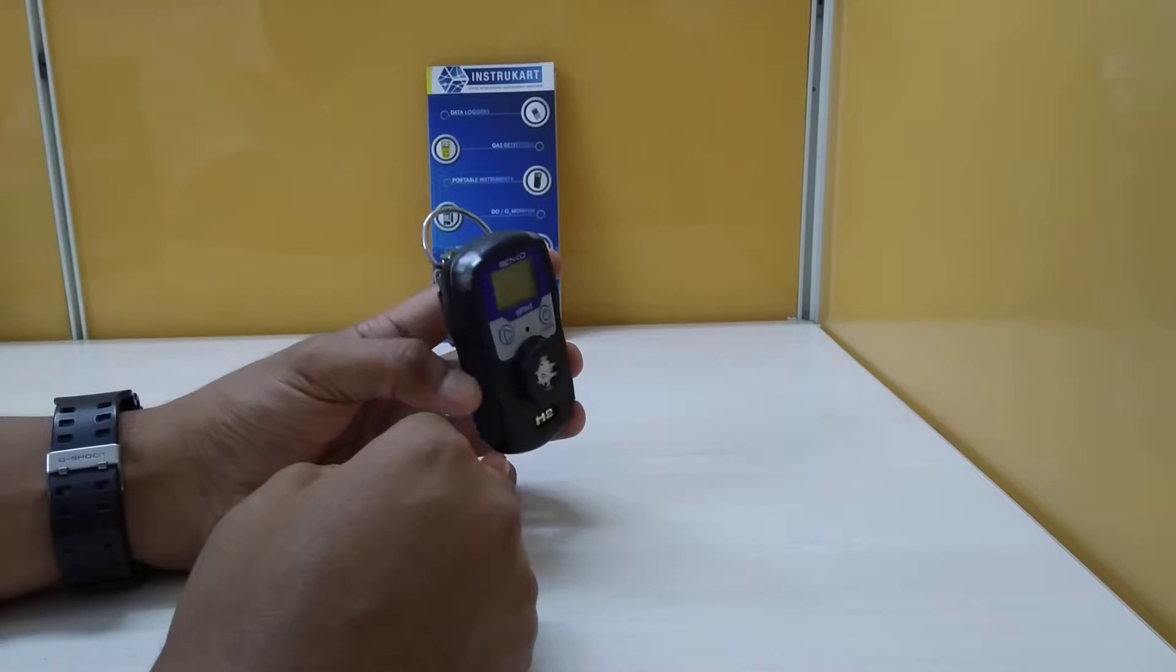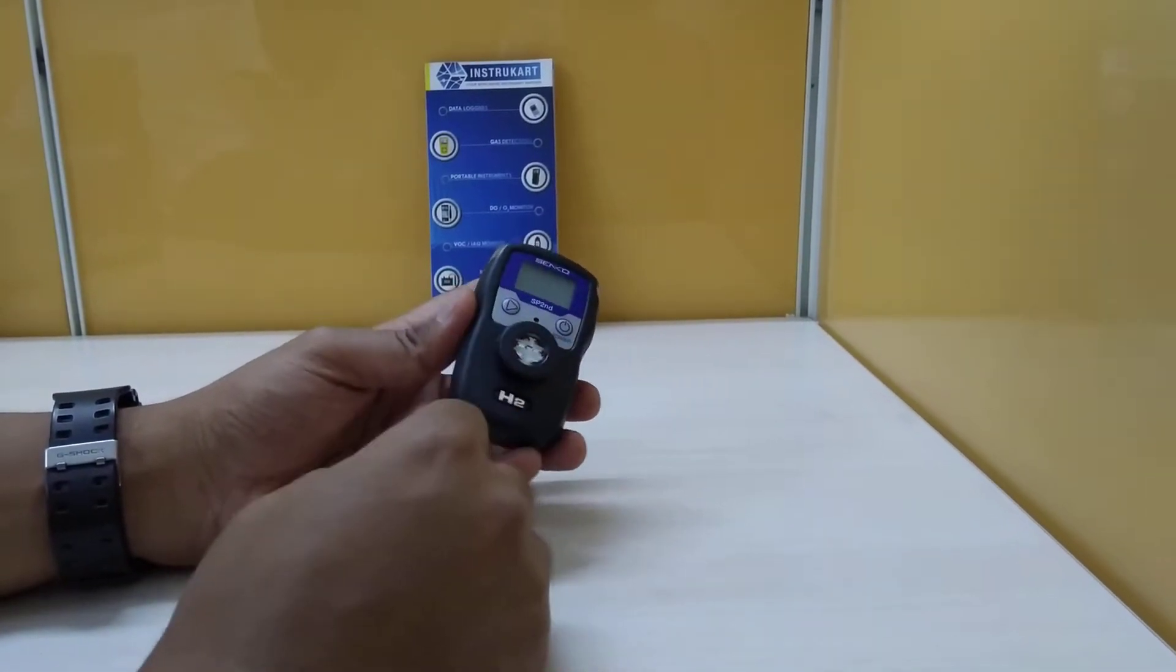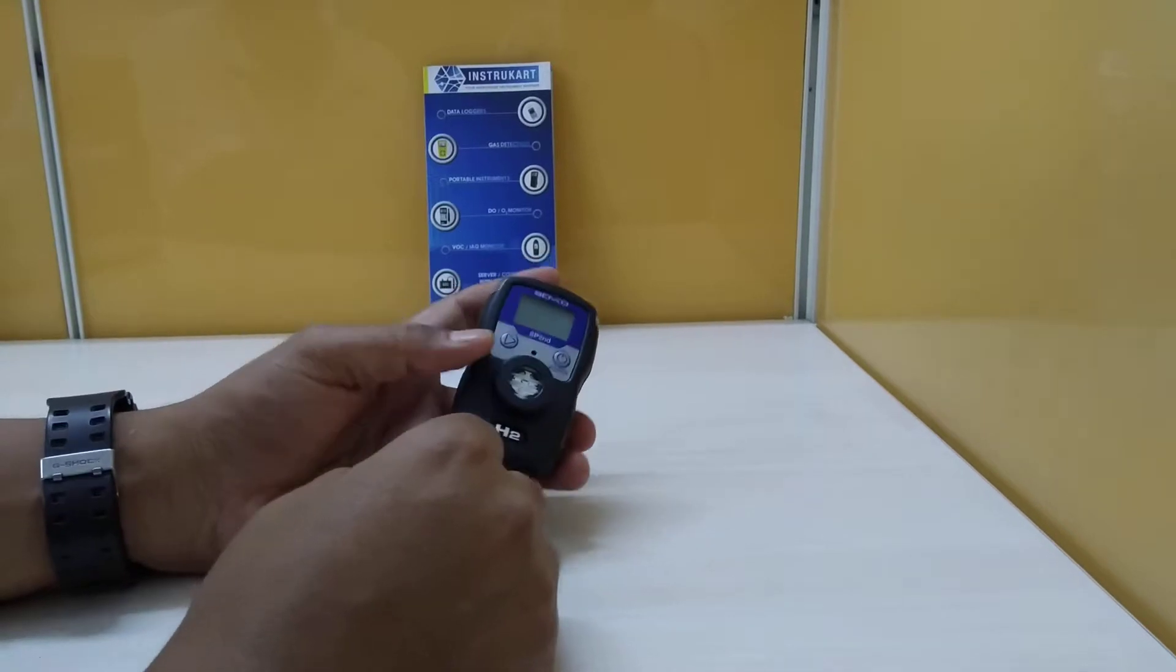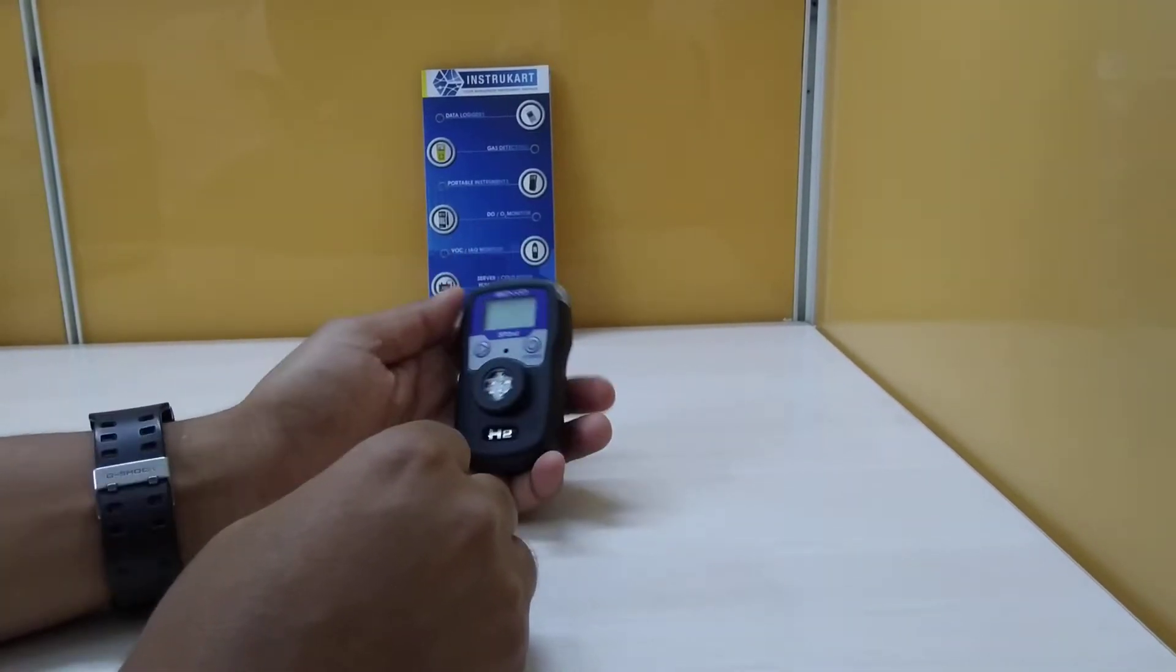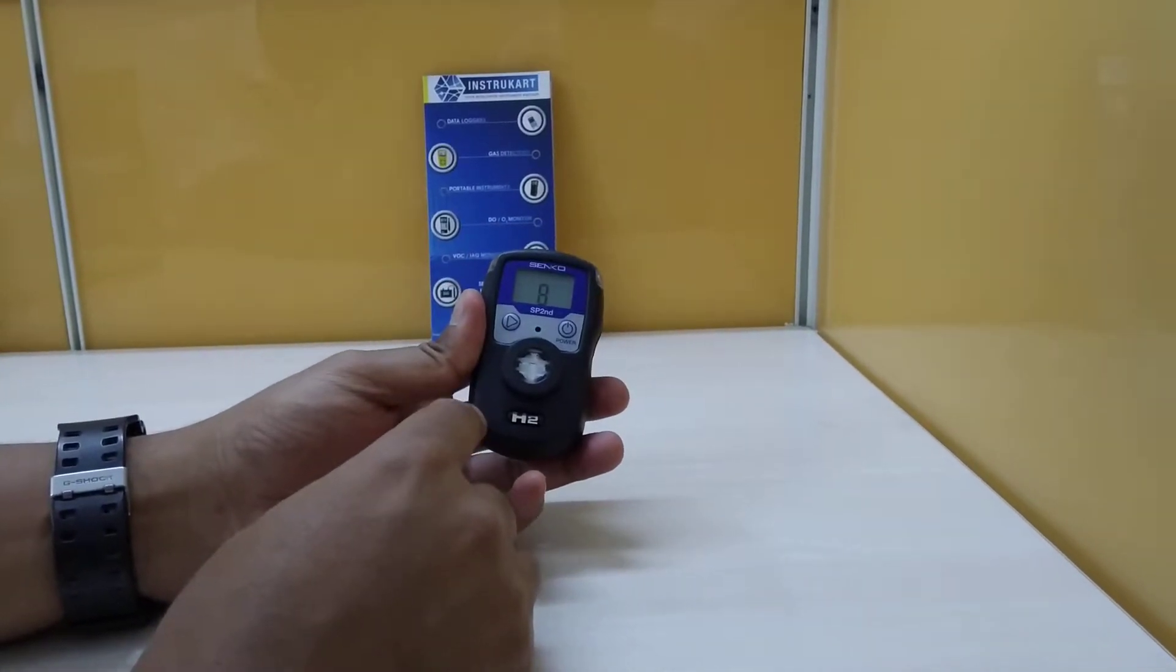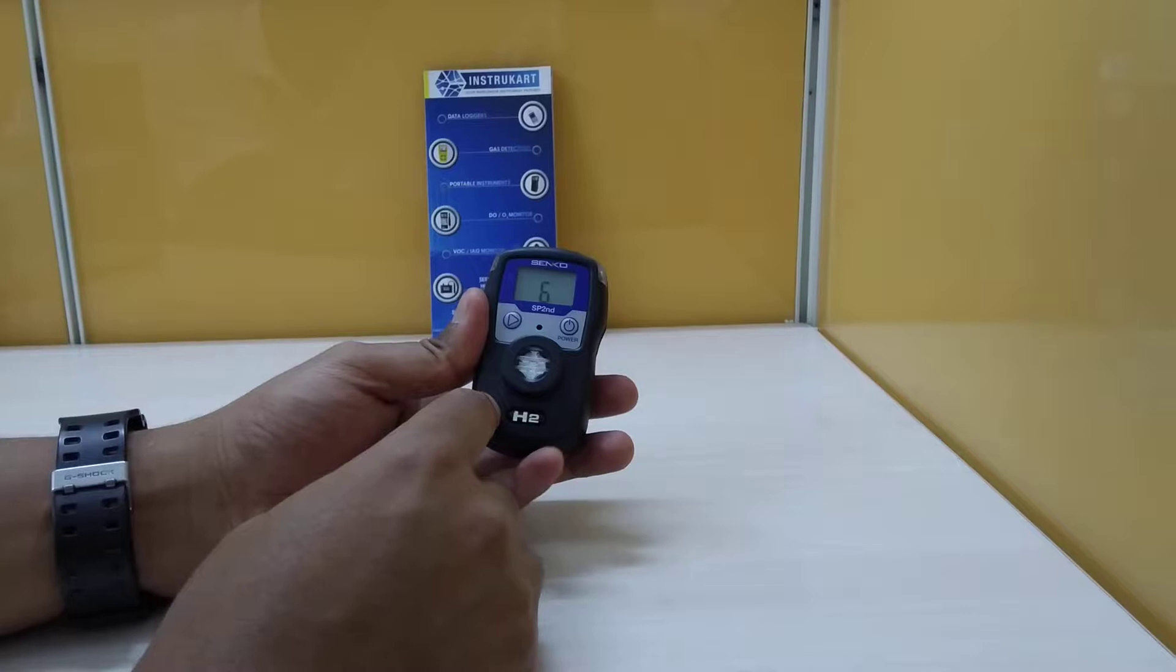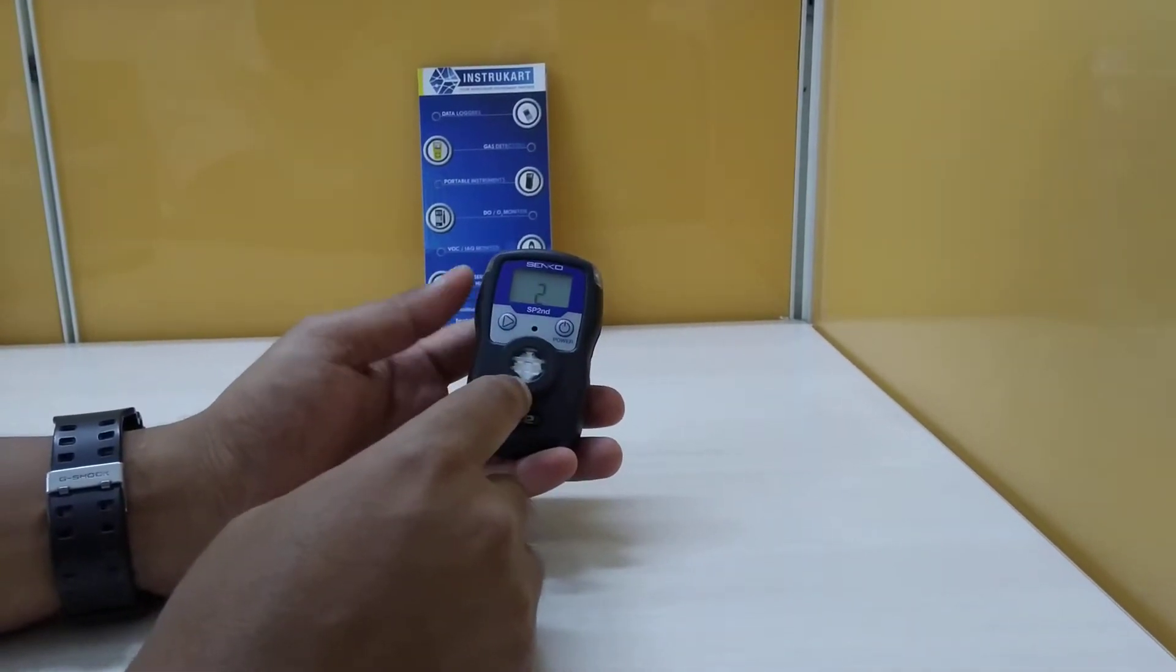This comes as a portable instrument where you can use the battery to run it. This instrument has a range of 0 to 1000 ppm for hydrogen with very good accuracy.